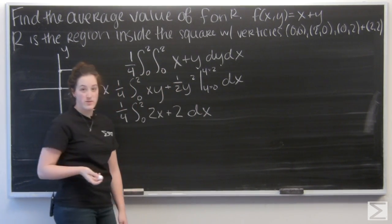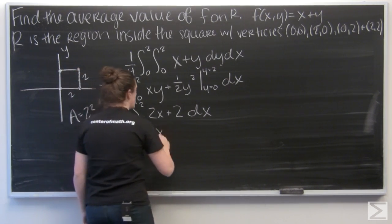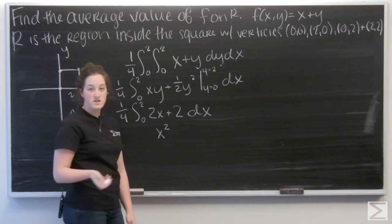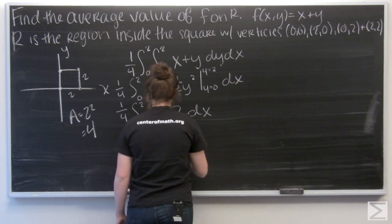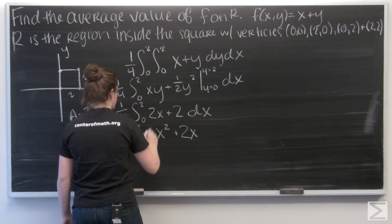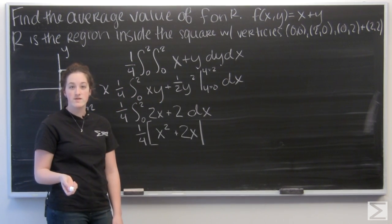And now I just have to integrate with respect to x. So 2x is going to become x squared. And 2 is going to become 2x. So I'm going to get my 1 fourth. And then I'm evaluating from x equals 0 to x equals 2.